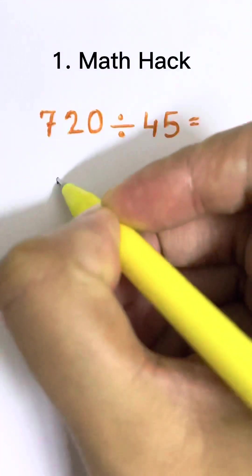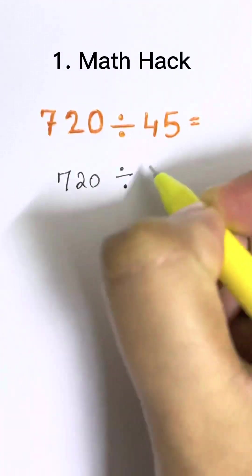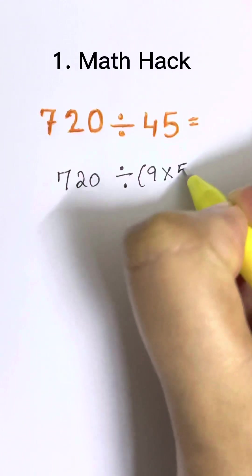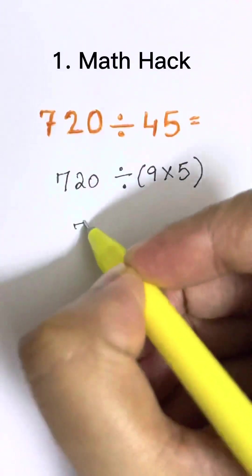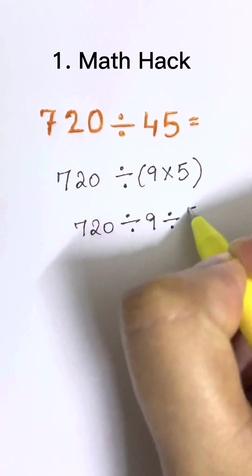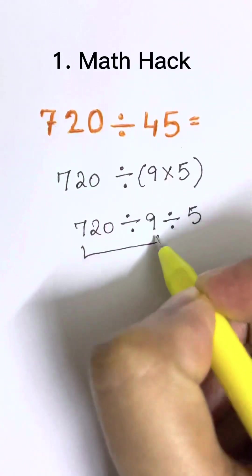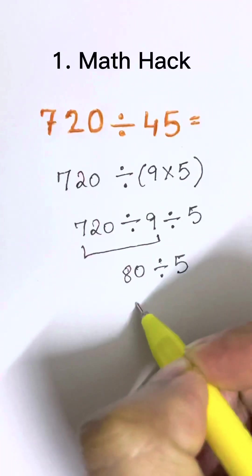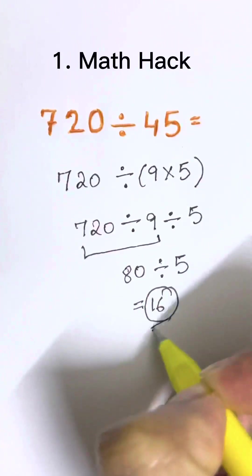How will you divide 720 divided by 45? 720 divided by 45 can be written as 9 times 5. Now we're going to split that: 720 divided by 9 divided by 5. 720 divided by 9 is 80. 80 divided by 5 is 16. That's your answer.